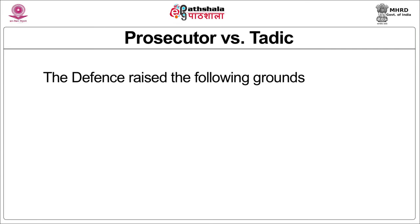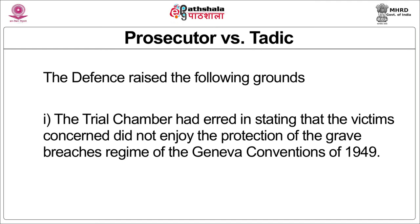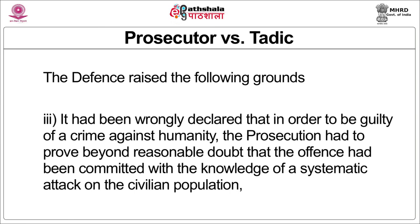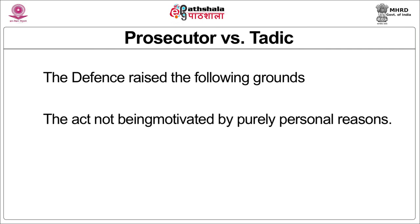The defence raised the following grounds: first, that the trial chamber had erred in stating that the victims concerned did not enjoy the protection of the grave breaches regime of the Geneva Conventions of 1949. Secondly, that the appellant Dusko Tadic ought to have been held guilty on counts 29, 30, and 31 of the indictment, and that it had been wrongfully declared that in order to be guilty of a crime against humanity, the prosecution had to prove beyond reasonable doubt that the offence had been committed with the knowledge of a systematic attack on the civilian population, the act not being motivated by purely personal reasons.